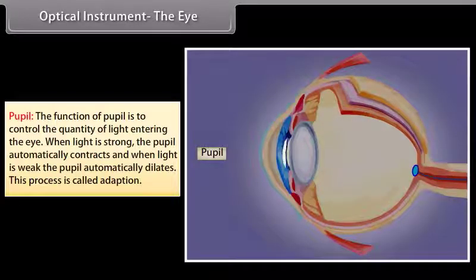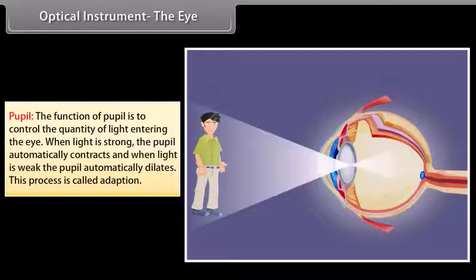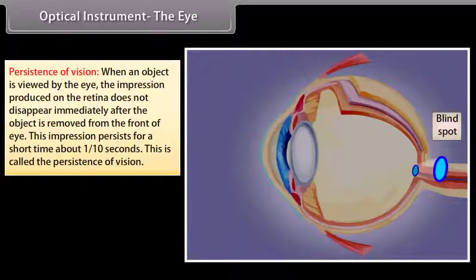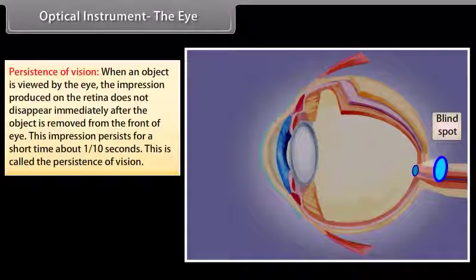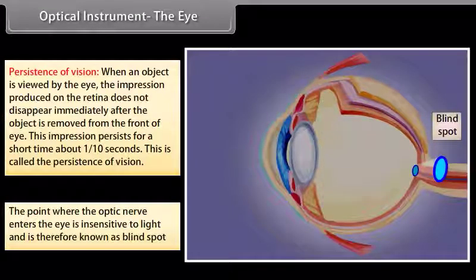The pupil controls the quantity of light entering the eye: it contracts in strong light and dilates in weak light — this is called adaptation. Persistence of vision: the impression on the retina persists for about 1/10 second after the object is removed. The point where the optic nerve enters the eye is insensitive to light and is called the blind spot.